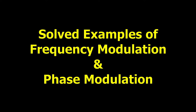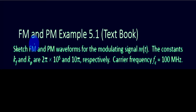This video contains four solved examples of frequency modulation and phase modulation. The first few examples are taken from our textbook. In the first example, we are asked to sketch a frequency modulated signal and a phase modulated signal for the modulating signal M of t. The sensitivity constants given to us are Kf and Kp.